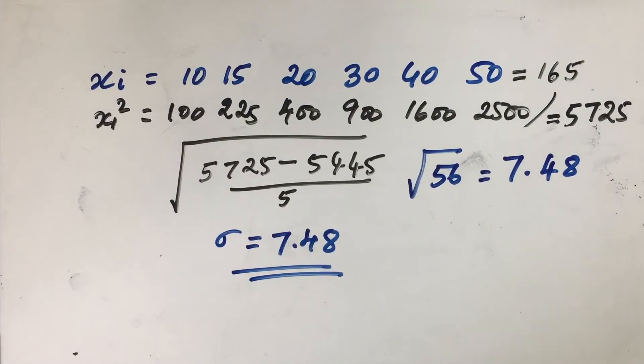So therefore the standard deviation of this particular distribution is equal to 7.48. So this is how we calculate standard deviation for an ungrouped data. We should take up more and more examples and learn to find the standard deviation.